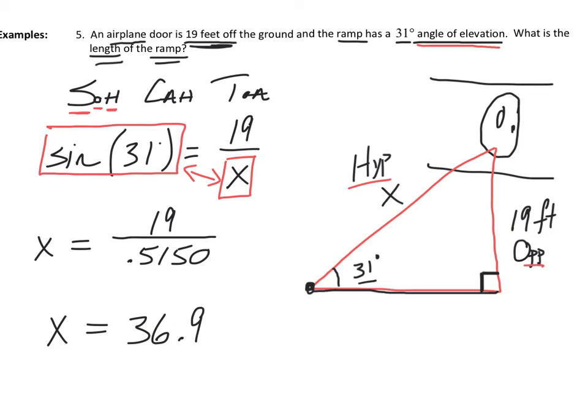They didn't specify where to round in this case, but I'm going to choose to round to the nearest tenth — that's usually going to be the case for any word problems in this section. And the last thing I'm going to include are my units. It was 19 feet off the ground, so my ramp is 36.9 feet long.